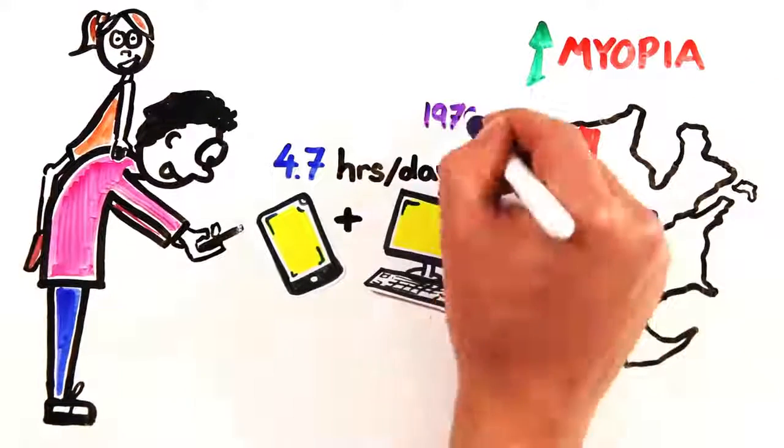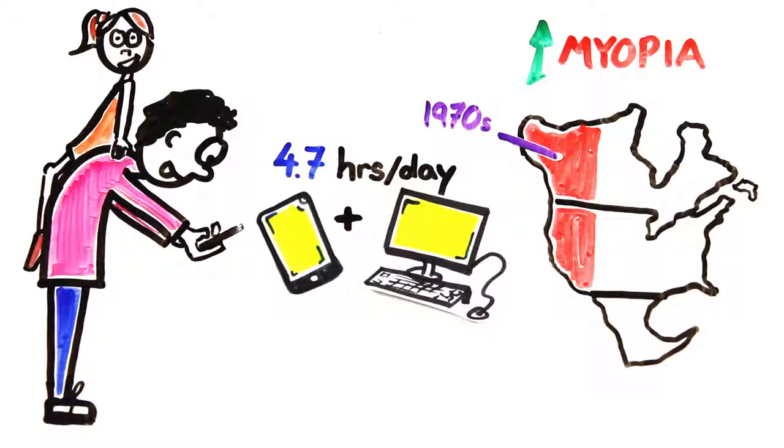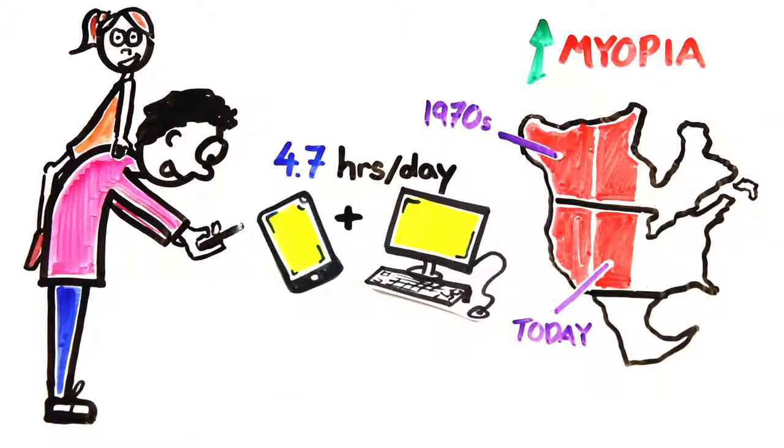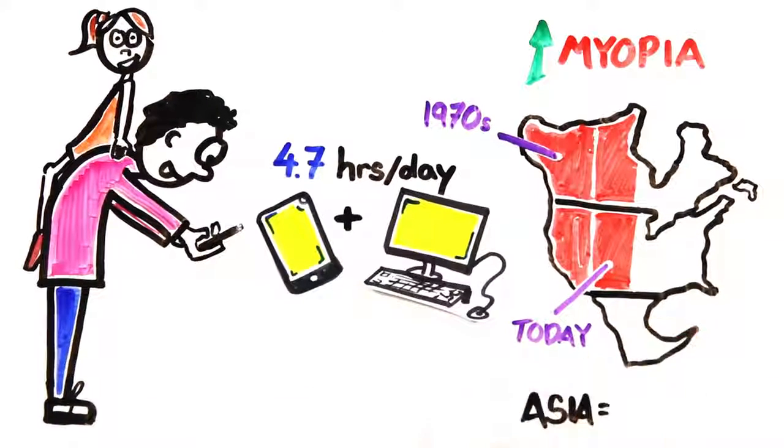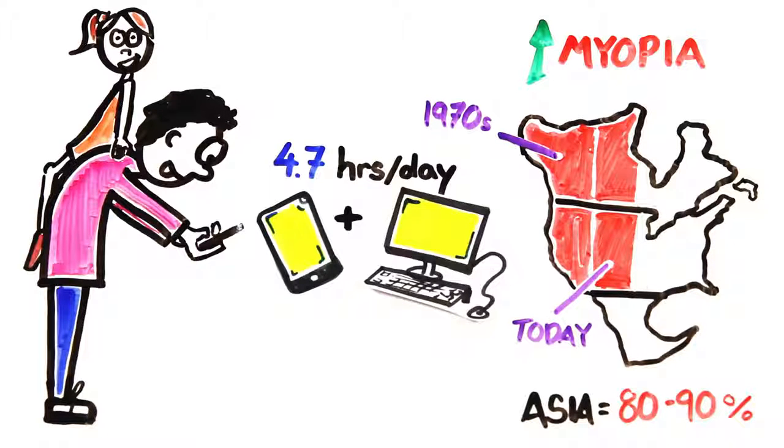In the 1970s, about one quarter of the population had myopia, where today nearly half do. And in some parts of Asia, 80-90% of the population is now nearsighted.